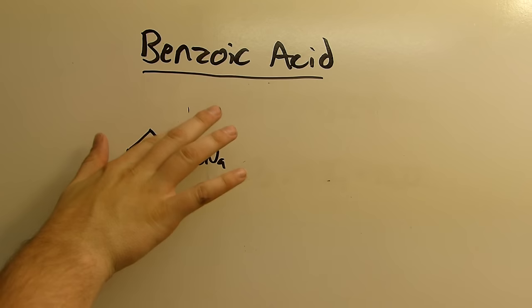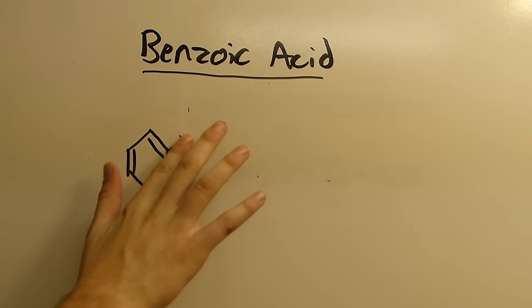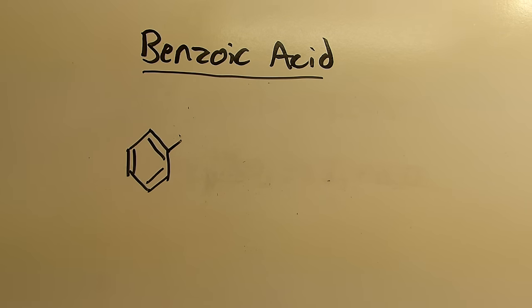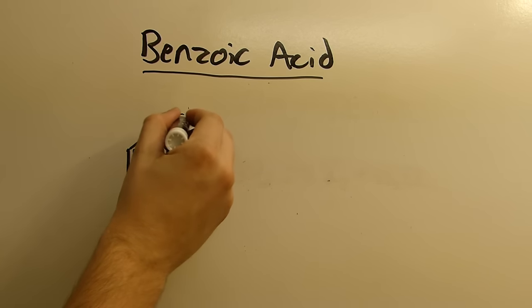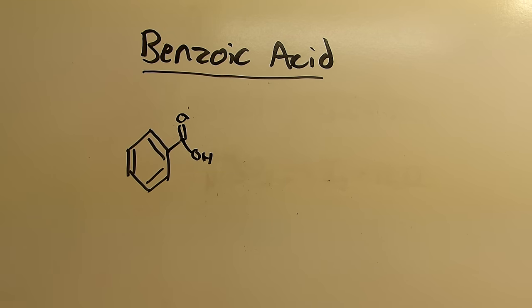Some people oxidize toluene to make benzoic acid. Now, this here is toluene, it's methylbenzene, and it's susceptible to attack at the methyl group here, especially in oxidizing conditions. You can use something like potassium permanganate to oxidize this to benzoic acid, but that wastes permanganate and toluene, both of which are much more expensive than sodium benzoate.